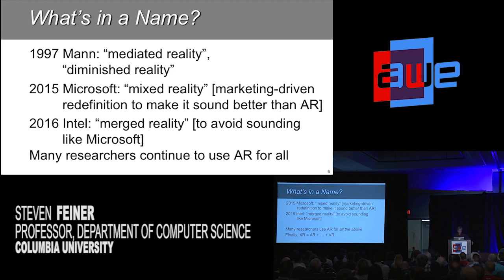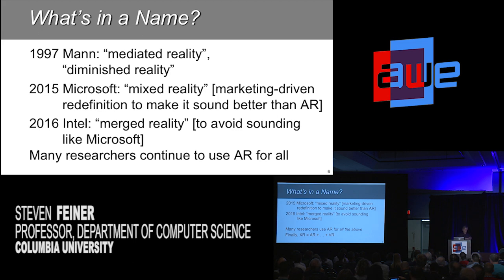A year later, along came Intel. They wanted to do the same thing but couldn't use the term mixed reality because Microsoft was using it a lot. So to avoid sounding like Microsoft, they decided to call things merged reality. Many researchers, myself included, use AR for all of the above. And then, just to make things fun, we now have the term XR, which simply uses X for pretty much any of those letters that comes before R — so AR, MR, VR, it's all XR. I think that throws out some really useful distinctions, but you will hear people using it.